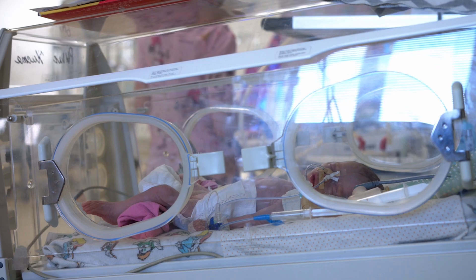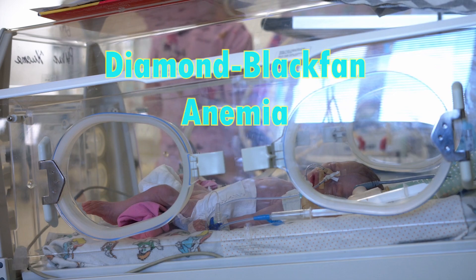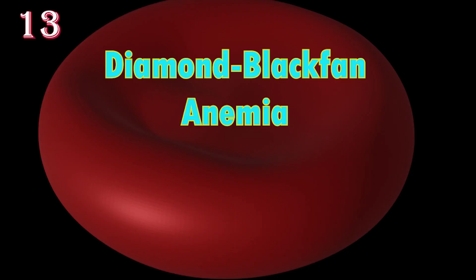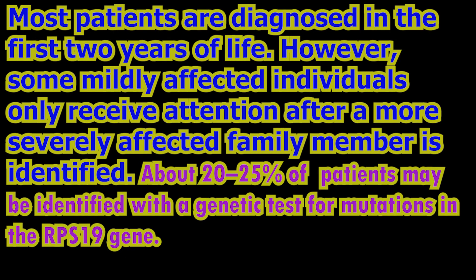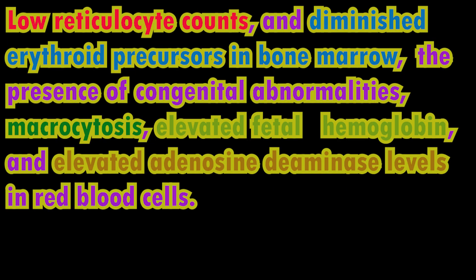Congenital dyserythropoietic anemia has four different subtypes. Diamond Blackfan anemia is characterized by normocytic or macrocytic anemia with low RBC count, with decreased progenitor cells in the bone marrow. It is a congenital erythropoietic aplasia that usually presents in infancy, causing low RBC count and normal platelet and WBC count.